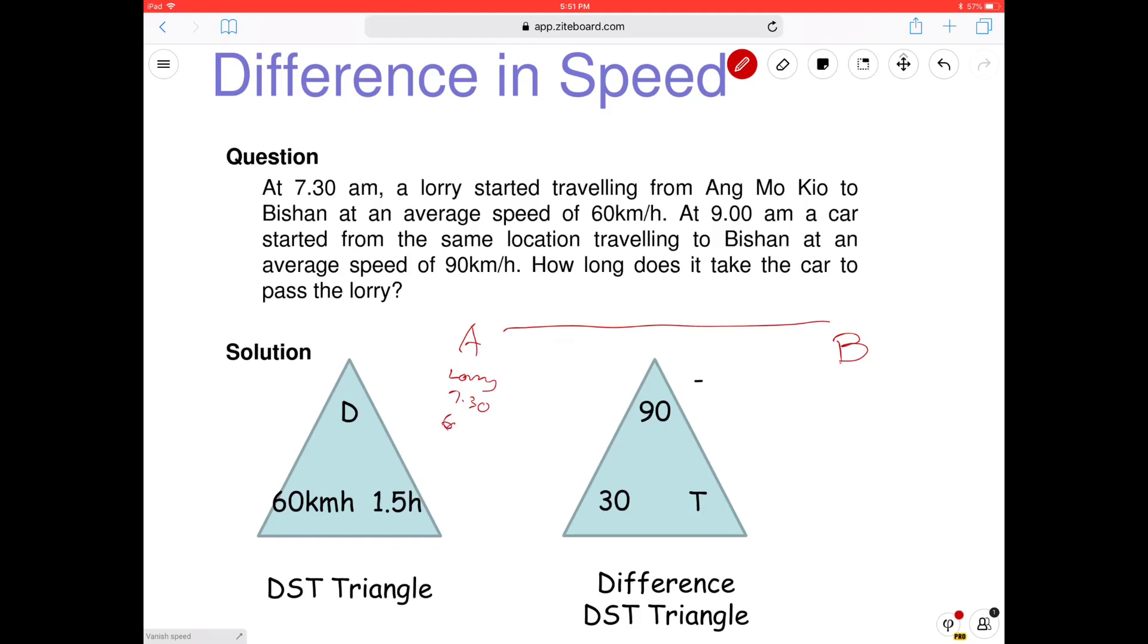Okay, 60km per hour. Right? So at 9am, a car started from the same location. Now this is 2 hours later. Sorry, 1 and a half hours later. 1 and a half. But by the time, 1 and a half hours later, the lorry is already here. Right? And how far away is it? 60? What was the distance that the lorry has covered? Until 9am. Let's find out. This is our normal DST. Let's find out. How do you know? How do you find out?